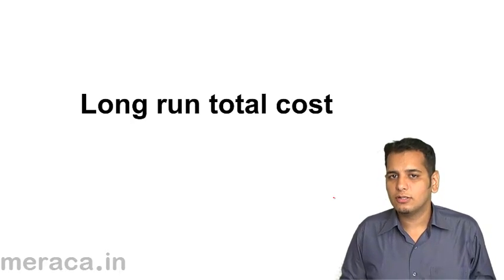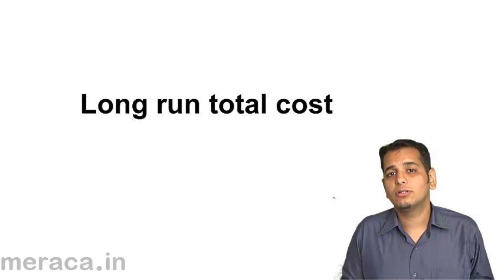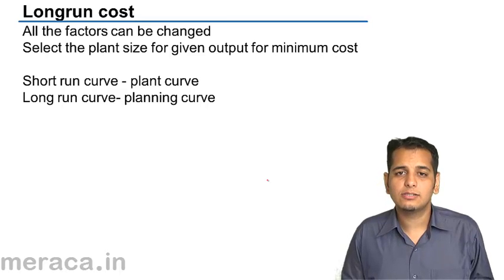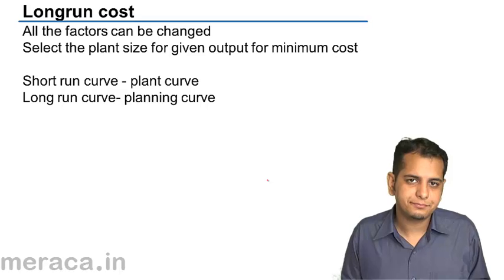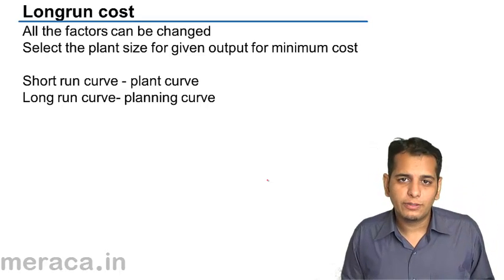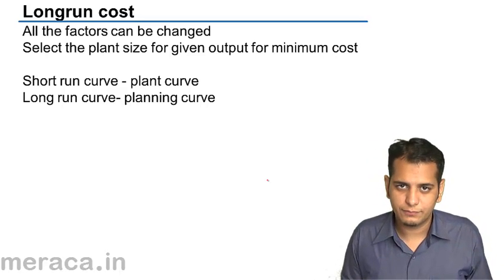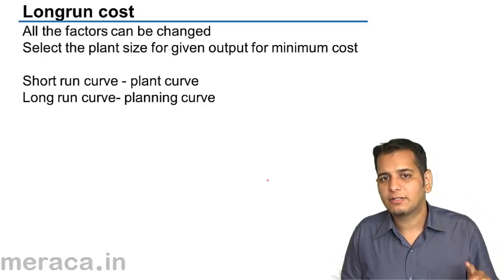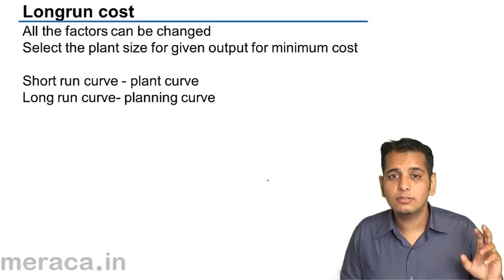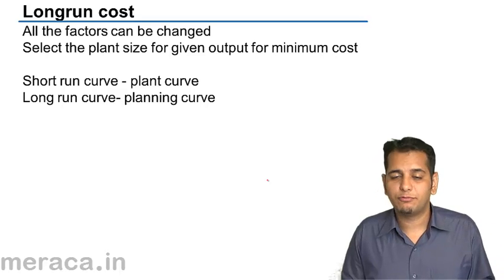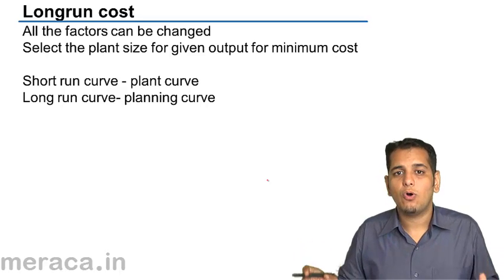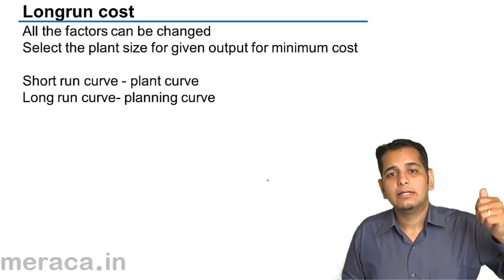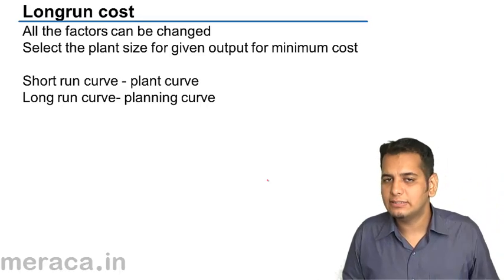Now that we are done with the short run cost curves, let's understand and study what are the long run cost curves. Before going to long run cost curves, let's understand what is the long run period. The long run period is that period wherein the level of output can be changed by changing all the factors together. Short run is that period wherein only one factor of production can be changed for changing the output. So long run cost curves means the cost incurred by a firm in that period wherein it changes all its factors of production to change the level of output — in other words, it varies the factors of production to increase the level of output.